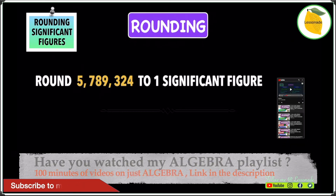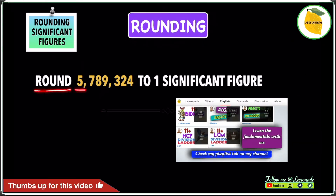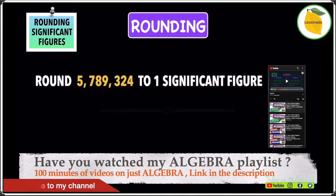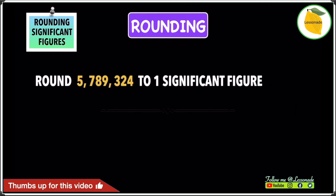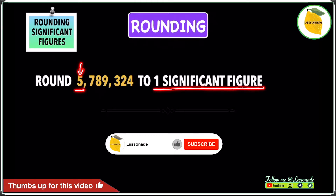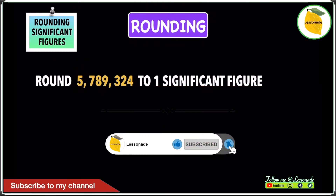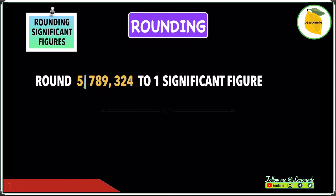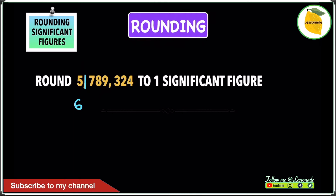Now let's have a look at rounding significant figures for this example. The question is: round 5,789,324 to the first significant figure. The first significant figure is the first non-zero digit, which is 5. So because 5 is the first significant figure, draw a line after 5. The number after the line is 7. Since 7 is 5 or above, add 1 to the number before the line, which is 5 — giving you 6 — and then replace the remaining digits with zeros. So the rounded figure is 6,000,000.